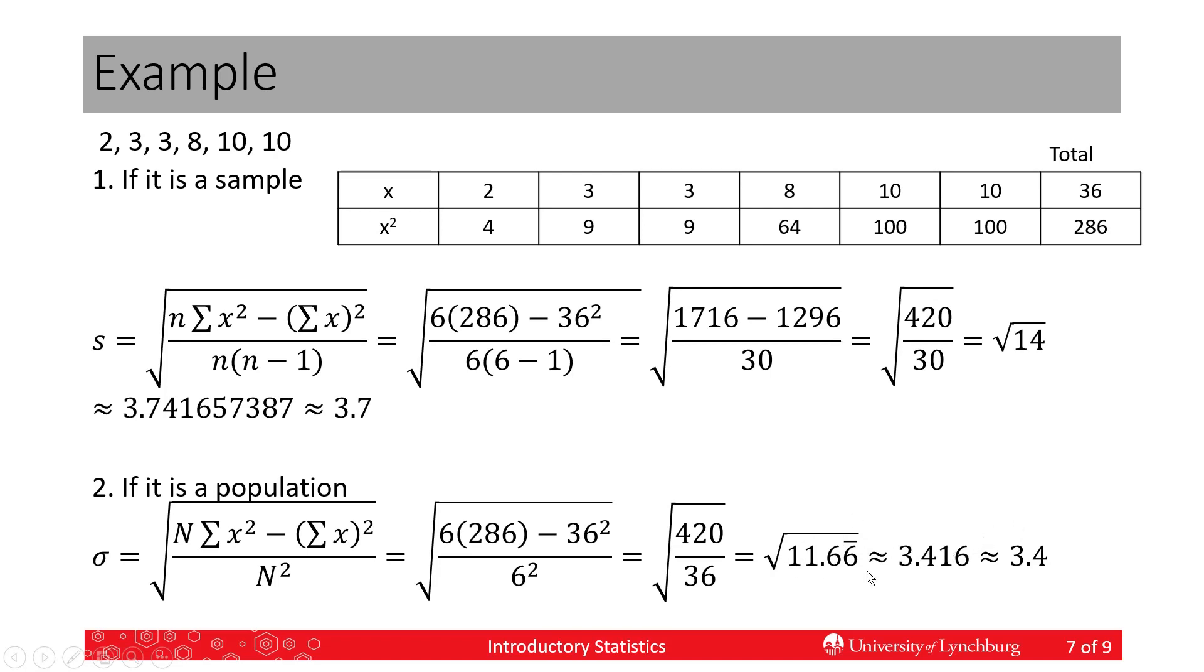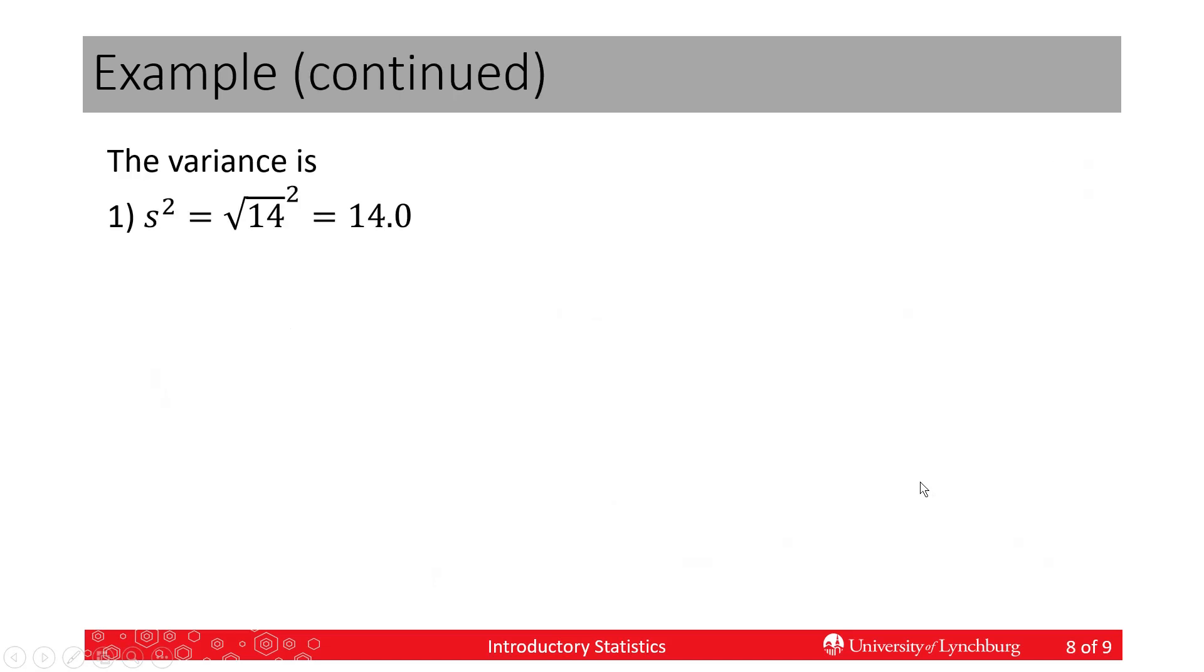When I take the square root, I have to leave this 11.666666 in my calculator, take the square root, I get 3.416. I'm rounding to one more decimal place than I had in my data, so it's 3.4. Instead of getting 3.7, I get 3.4. That's a pretty big difference in these two numbers.